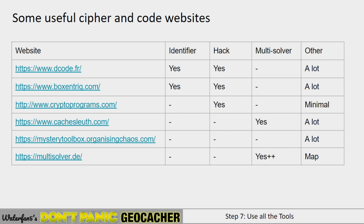There are six different websites, and funny enough they all seem to come from a wide variety of countries. Decode started out as a French website but is translated in English. Boxentriq is a Swedish website. Cryptoprograms and CacheSleuth are both hosted in the US. Organizing Chaos — the S in organizing kind of gives it away — is a UK website. And multisolver.de is of course in Germany. I didn't put Geocaching Toolkit on the list, which is actually a Dutch site.